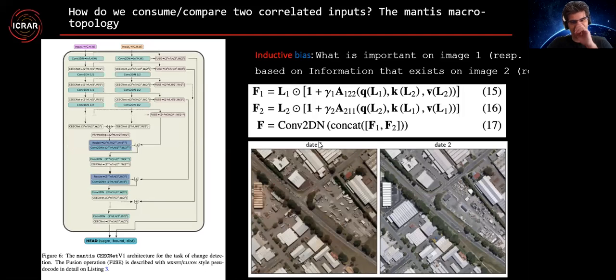Then the question is, how do you actually compare, or how do you consume two inputs? For that, we define the Mantis macro topology, like the animal mantis in Australia. It's very nice, the mantis shrimp. And what's happening here is that, this is something like a Siamese network. The features produced from each input image are not being subtracted. We just fuse them together with relative attention.